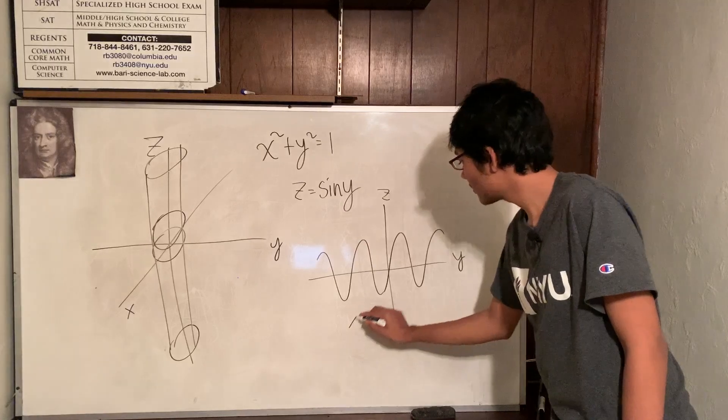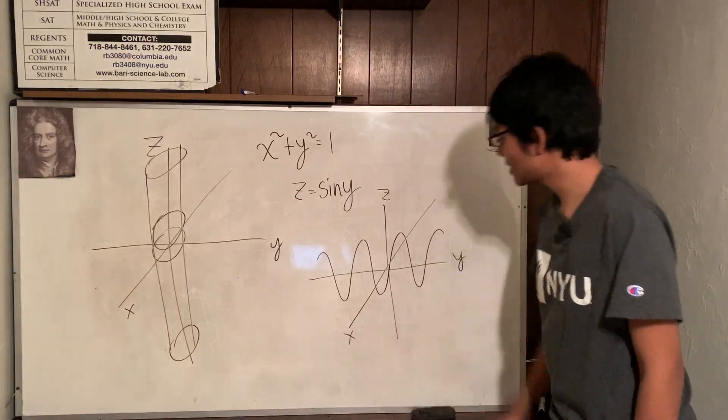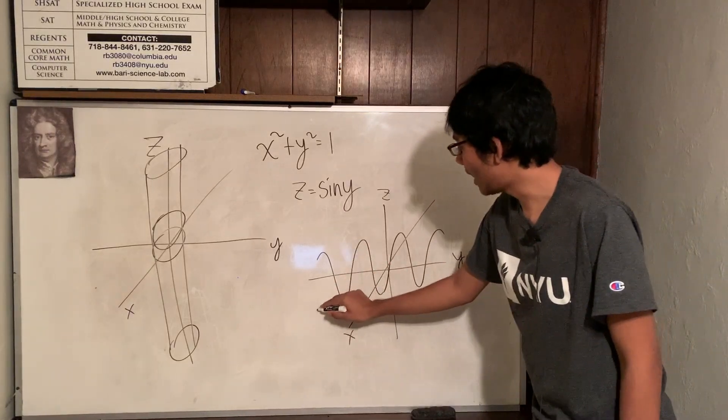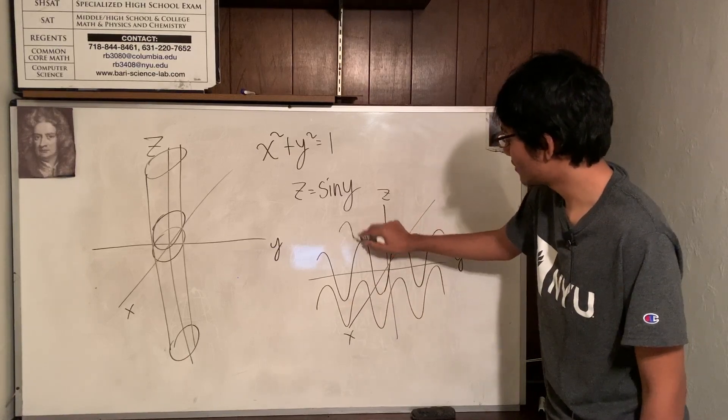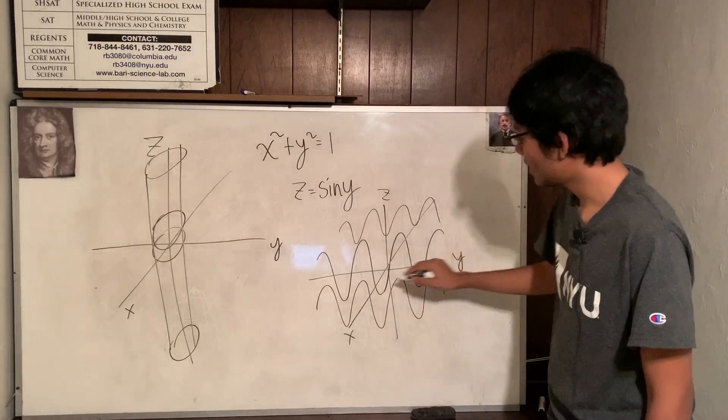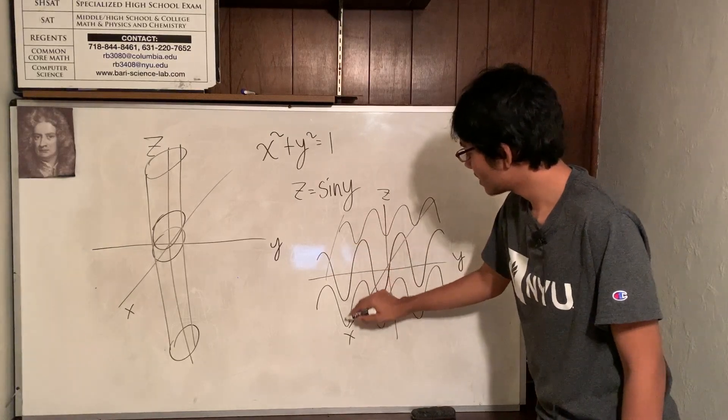And so, if I put my third axis, my X axis here, well, just make copies of that. Make copies of that sine curve. Make copies of that sine curve. And then connect them all together. Connect the dots.